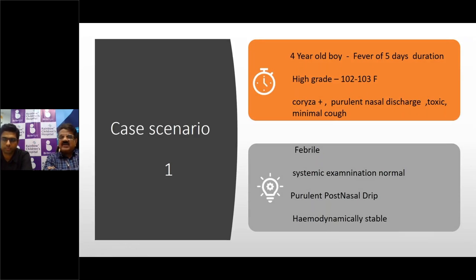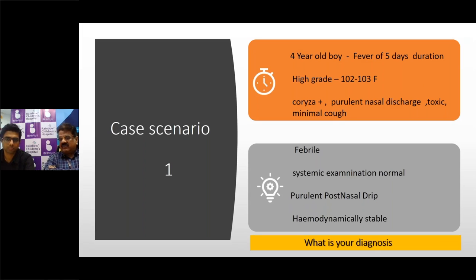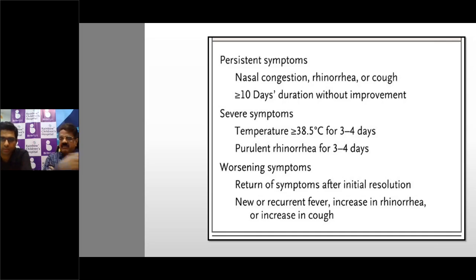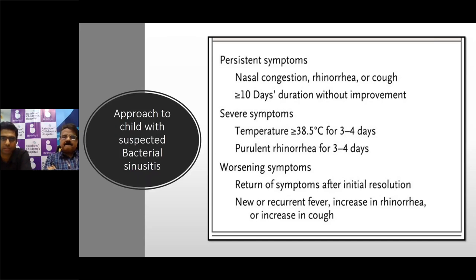Case scenario one: a four-year-old boy with fever of five days duration, quite high grade, with coryza and a purulent nasal discharge. Systemic examination is normal; a purulent post-nasal drip is seen on throat examination and he is hemodynamically stable. With high-grade fever, daytime cough, purulent discharge, and fever extending beyond the third day with an otherwise normal systemic examination, the commonest diagnosis here is acute bacterial rhinosinusitis.